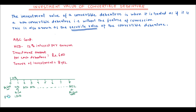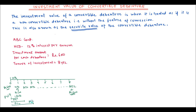We have to find the present value (PV) of this scenario. If after 1 year I get Rs. 72, what is its present value? If after 2 years I get Rs. 72, what is that present value? When I add up all of these, plus the present value of Rs. 600 at the end of 8 years, I get the investment value of the convertible debenture.